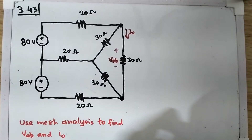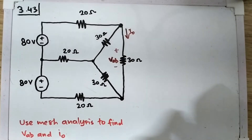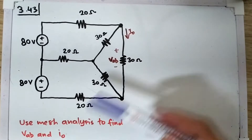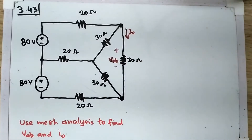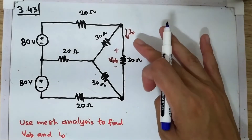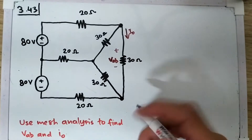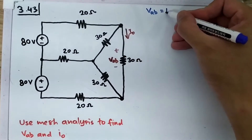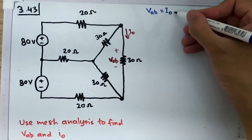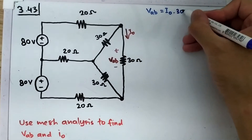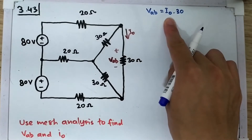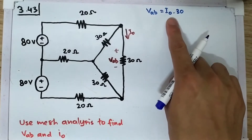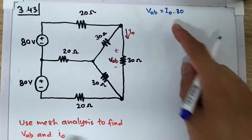We will solve problem 3.43 from Sadiku's book. The problem asks us to use mesh analysis to find Vab and I0. Vab equals I0 times the resistance, and since the resistance is 30 ohms, we only need to find I0. Once we have I0, we can automatically find Vab using mesh analysis as the problem requires.